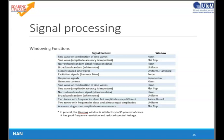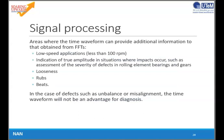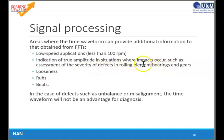Next is signal processing. Areas where the time waveform can provide additional information beyond what is obtained from FFT include low-speed applications below 100 rpm, and indication of true amplitude in situations where impacts occur, such as assessment of the severity of defects in rolling element bearings and gears, and also for looseness, rubs, and beats. In the case of defects such as unbalance or misalignment, the time waveform will not be an advantage for analysis. Normally we convert the time waveform into a spectrum for further analysis.